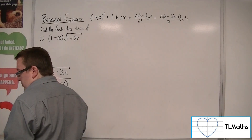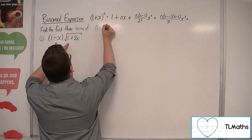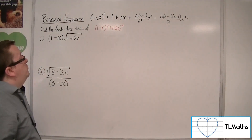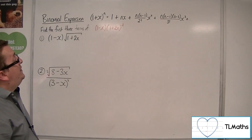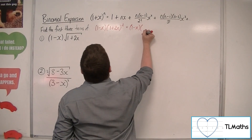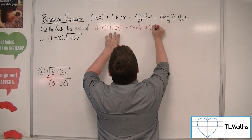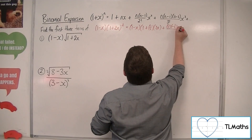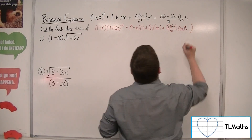What we're going to do first is write this as (1 minus x) times (1 plus 2x) to the half. So if we rewrite that second bracket as (1 plus 2x)^(1/2), then we're ready to use the expansion. We're going to leave the (1 minus x) alone and expand (1 plus 2x)^(1/2): we get 1 plus one-half times 2x, plus one-half times minus one-half over 1 times 2 times (2x)², plus other terms.